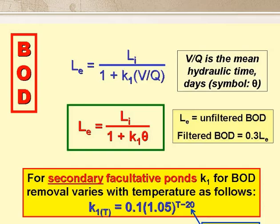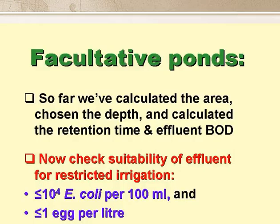This is how we calculate the unfiltered BOD of the facultative pond effluent. We use the first order equation shown in the red box, with K1 varying with temperature as follows: K1T equals K120 times 1.05 to the power T minus 20. The value of K1 at 20 degrees is 0.1 day to the minus 1 in secondary facultative ponds, and 0.3 day to the minus 1 in primary facultative ponds. So far we have calculated the area, chosen the depth, and calculated the retention time in effluent BOD.